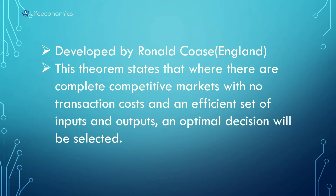In this theory, Ronald Coase is an English or British economist. It's a Nobel Prize-winning theory. This theory states that where there are complete competitive markets with no transaction cost — we don't have fees or commissions, we don't have that expense.